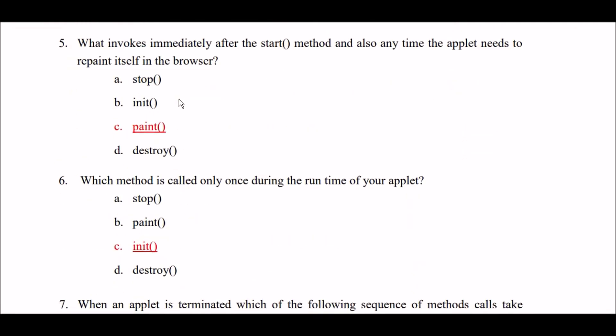What invokes immediately after the start method, and also anytime the applet needs to repaint itself in the browser? Option A: stop method. Option B: init method. Option C: paint method. Option D: destroy method. The right answer is Option C — paint method. Paint method invokes immediately after the start method, and also anytime the applet needs to repaint itself in the browser.